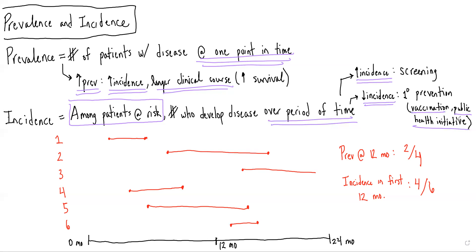One way that they like to test prevalence and incidence is by using graphs or charts, such as the one below. In this case, we can see that there are six patients, and the line shows the time from when they are initially diagnosed with the disease to when they pass away.